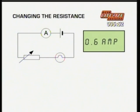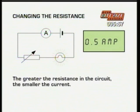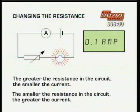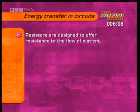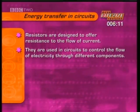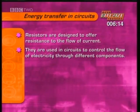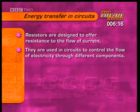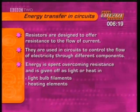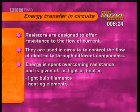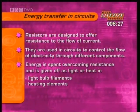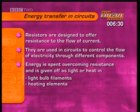An easier way to change the resistance is to use a variable resistor that can change its value. The greater the resistance, the smaller the current; the smaller the resistance, the greater the current. Resistors are specially designed to offer resistance to the flow of current. They're used in electric and electronic circuits to control the flow of electricity through the different components. In a circuit, energy is spent overcoming resistance. This energy is given off as light or heat, which is made use of in light bulb filaments and in heating elements of kettles, hair dryers and other heaters.